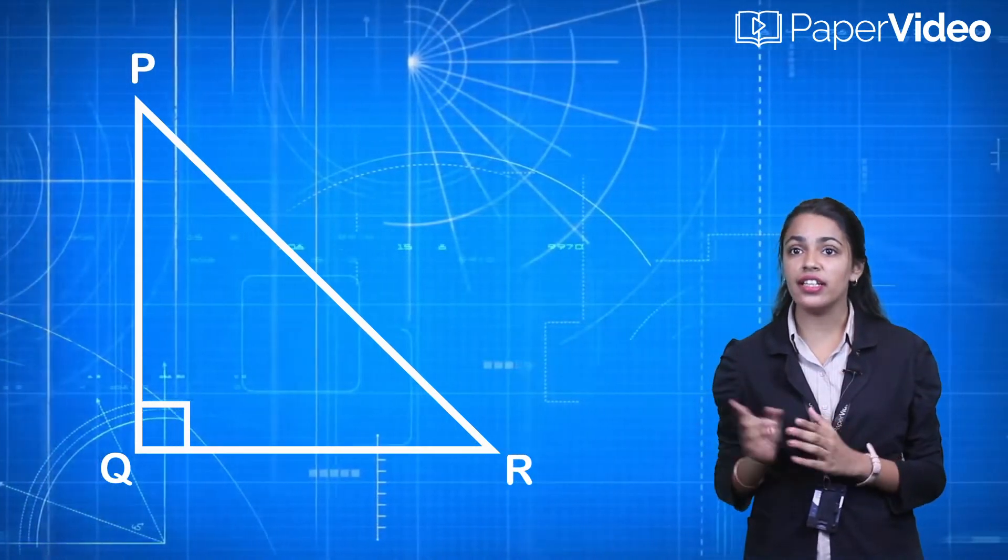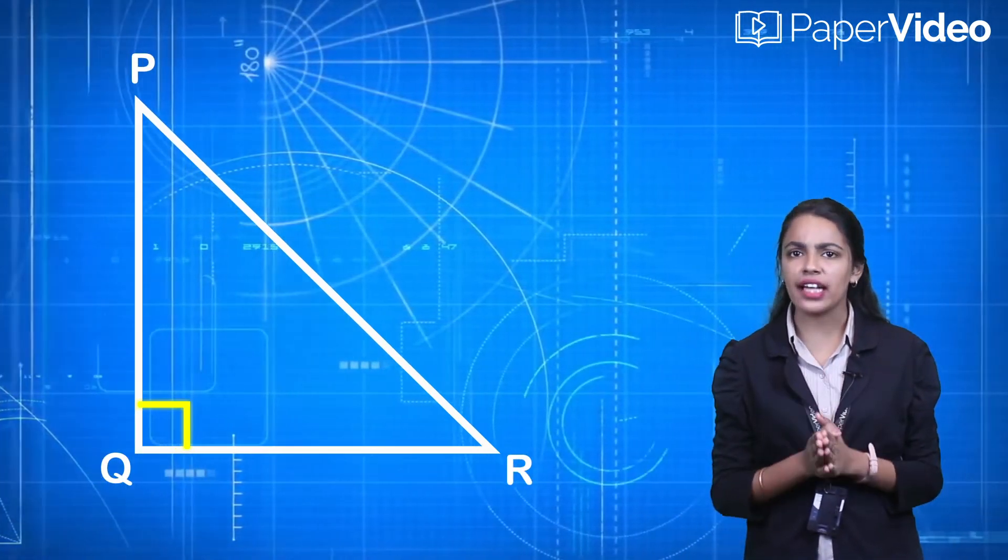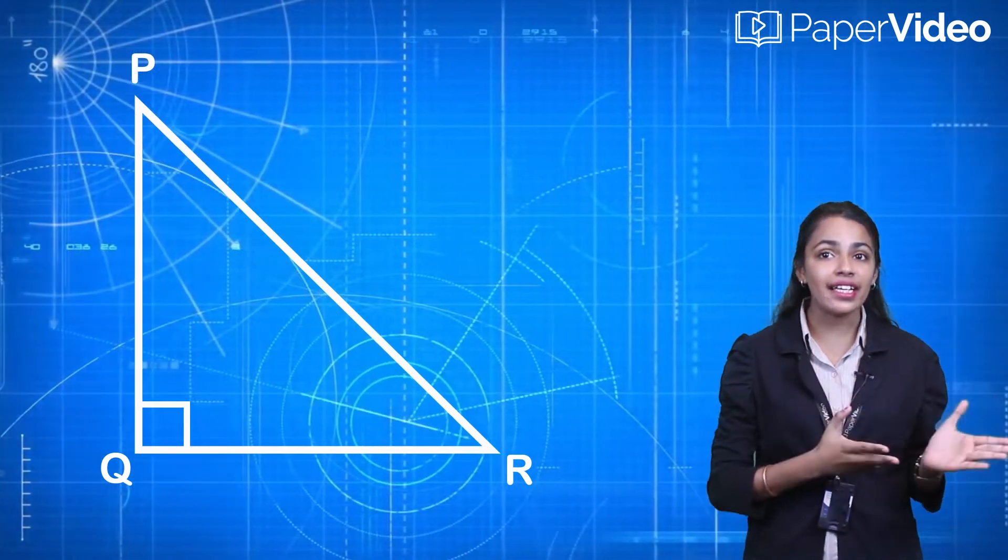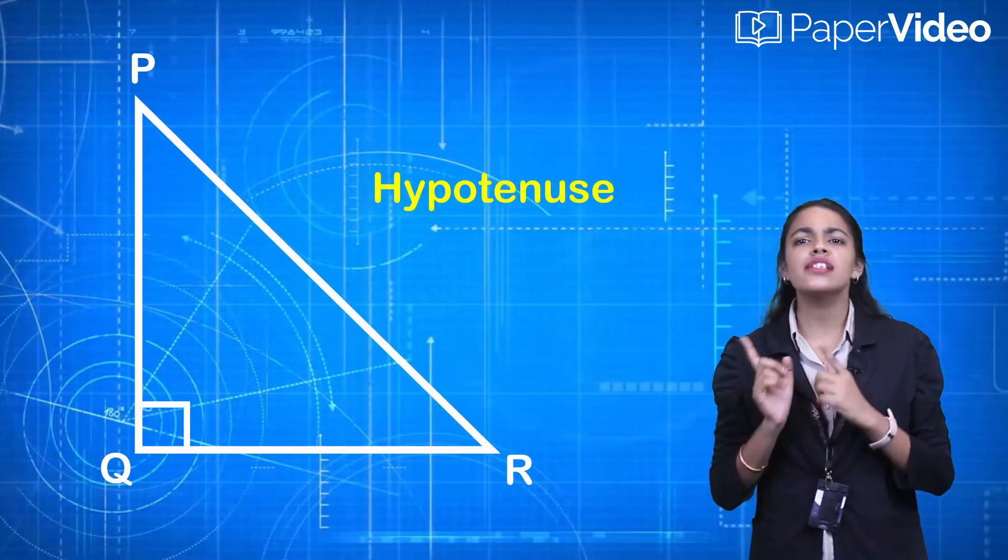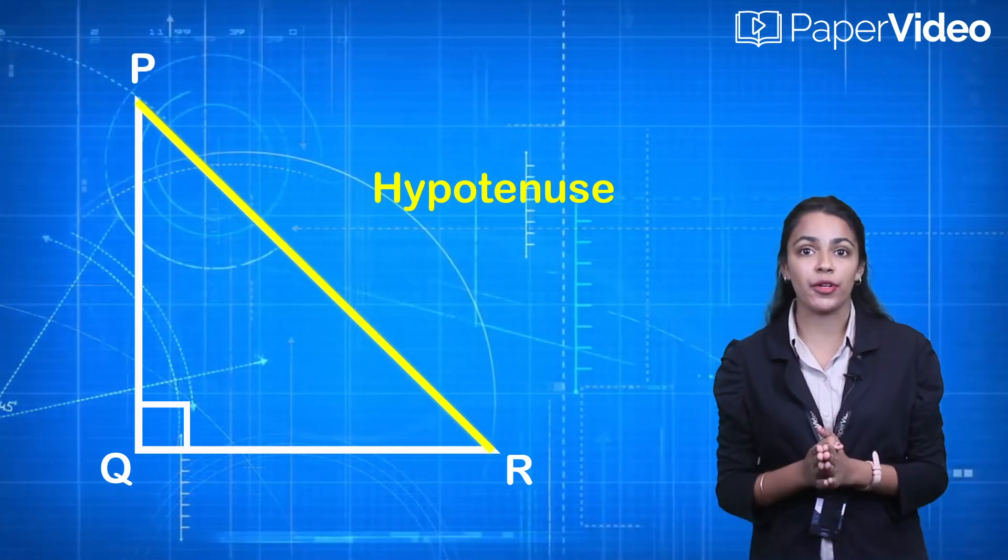In this triangle, angle Q is a right angle and the side opposite to the right angle is known as the hypotenuse. In this triangle, side PR is the hypotenuse.